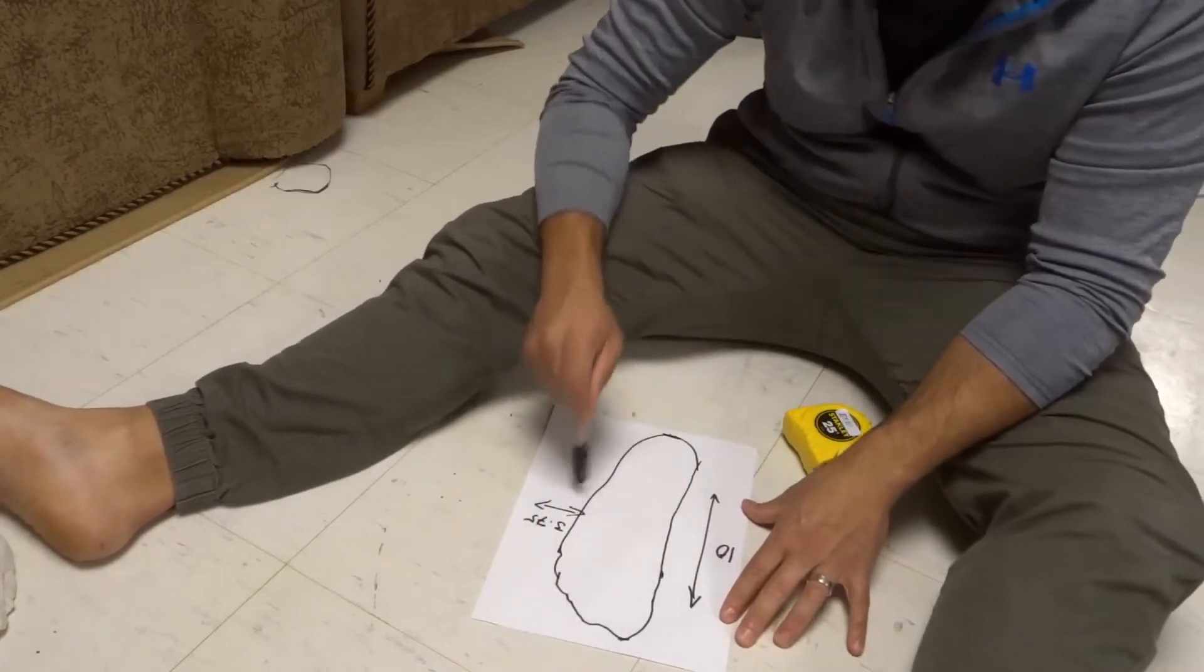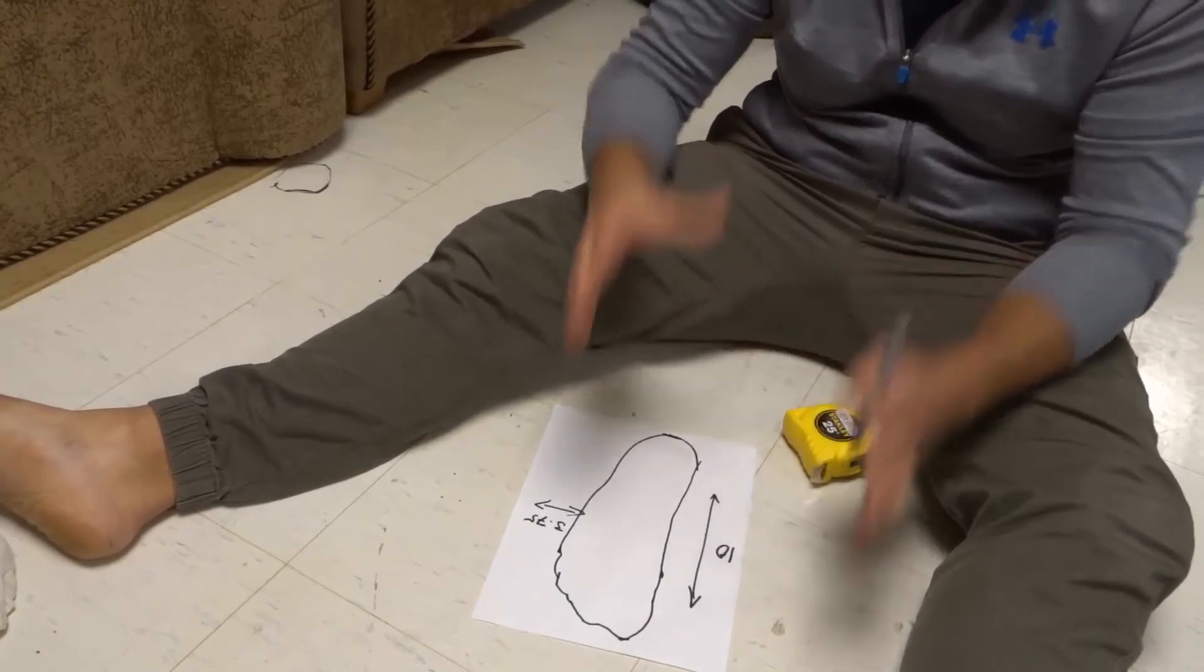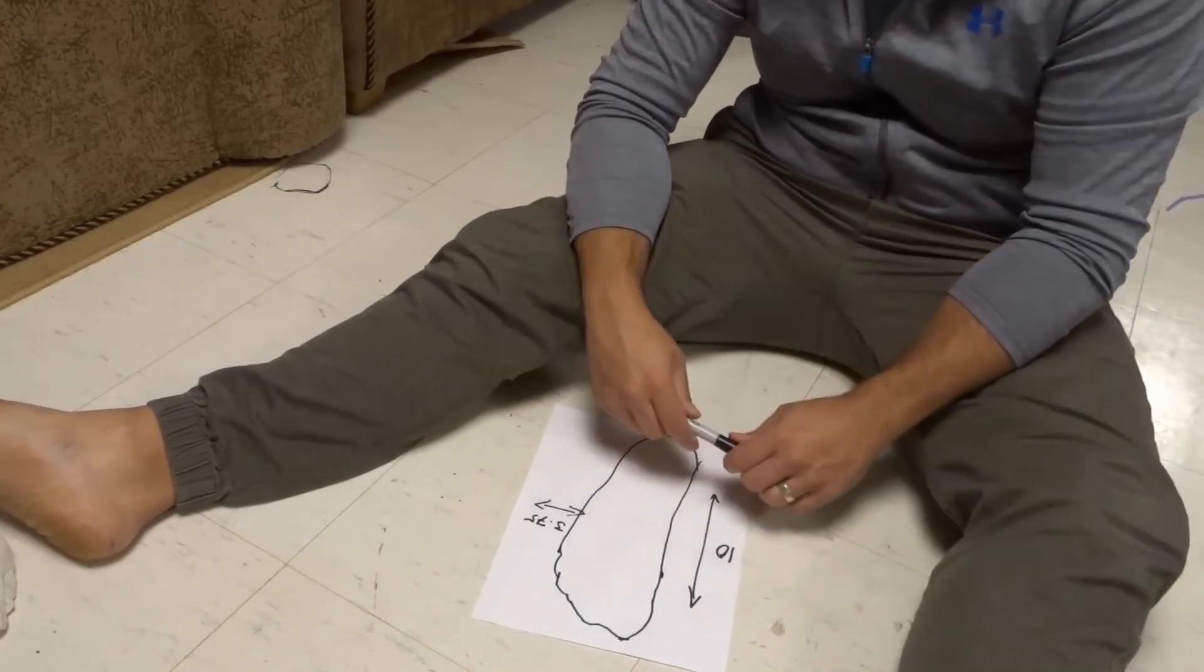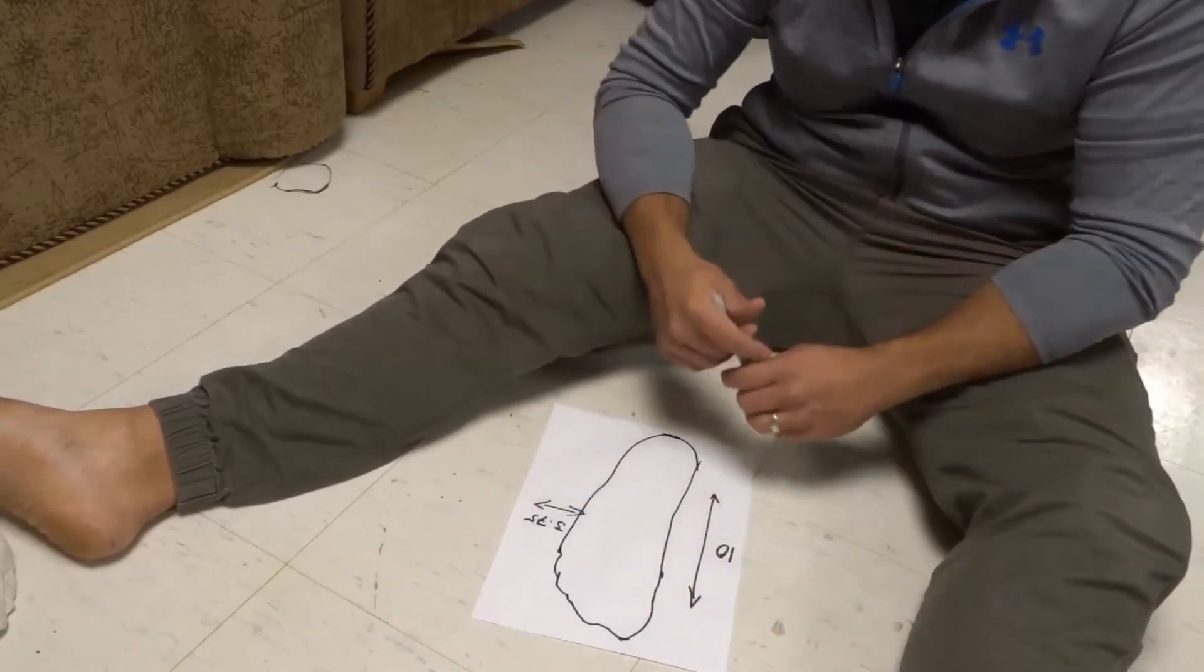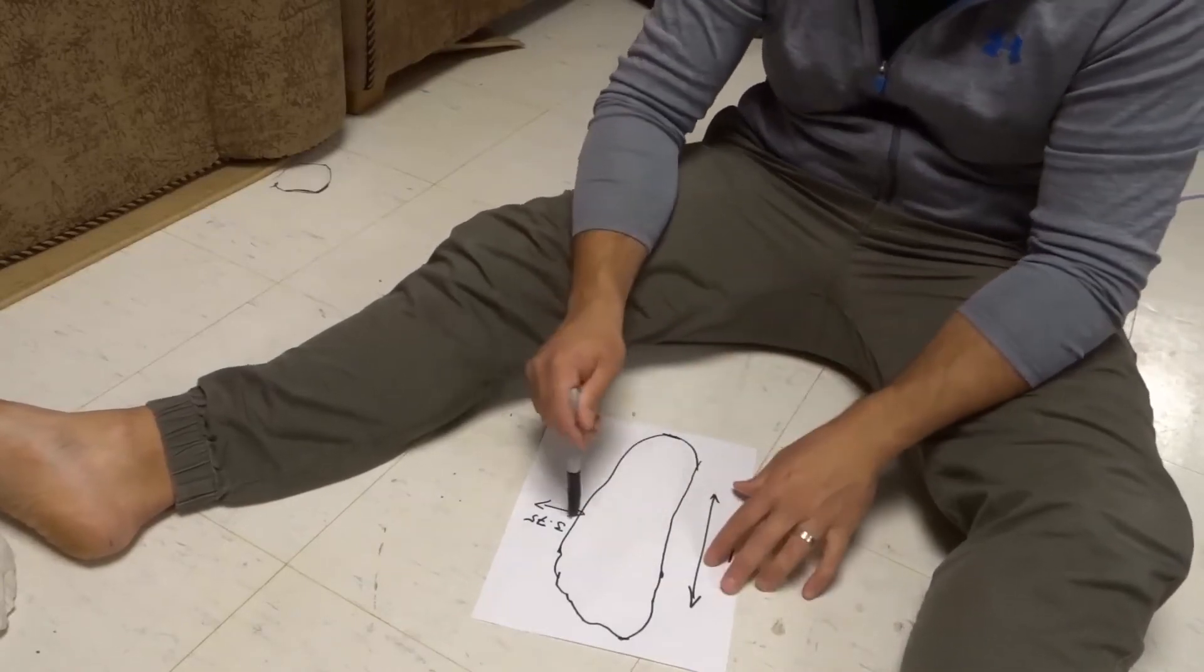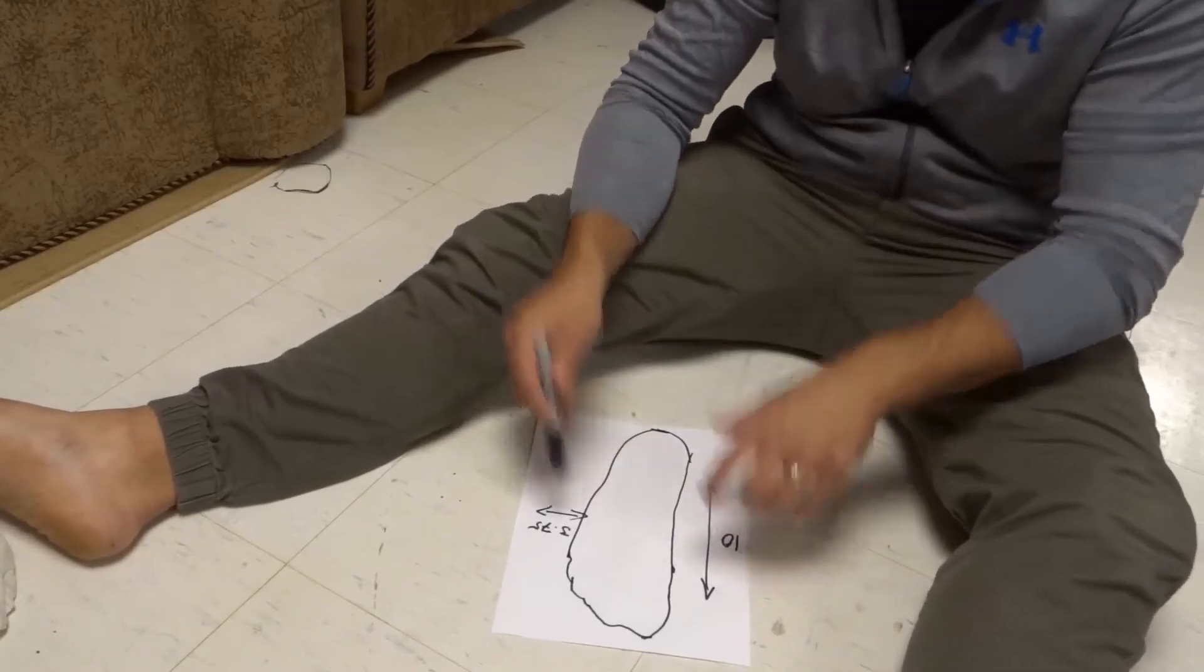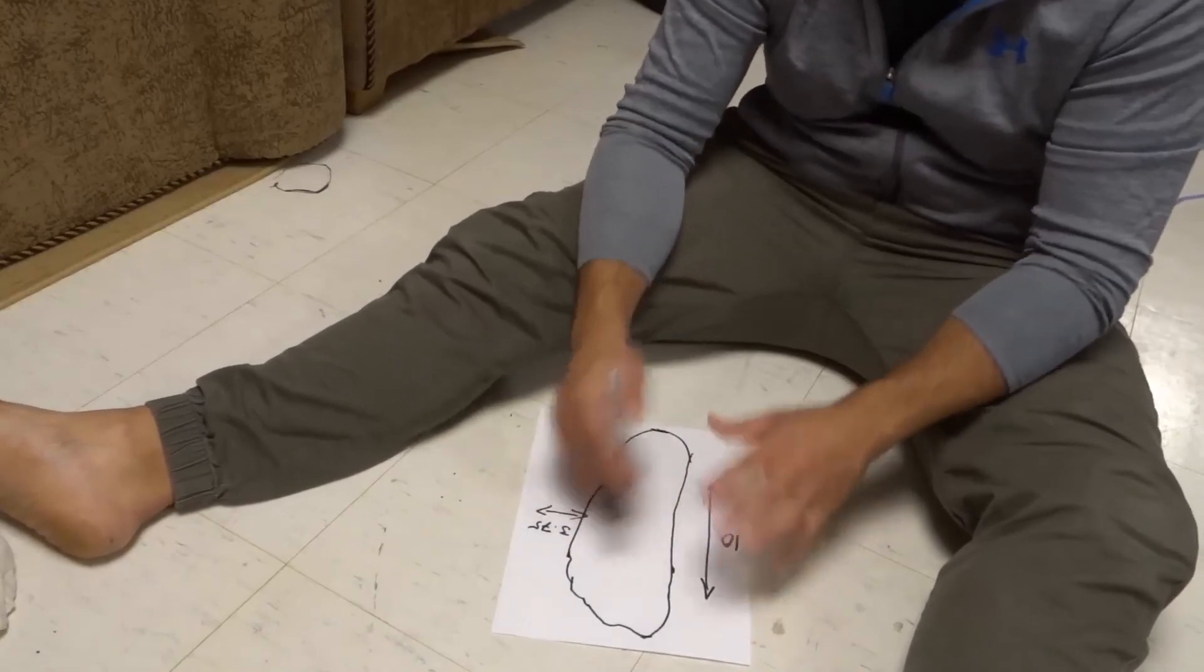Now what you're going to do is take those measurements and apply them to the foot size calculator or the shoe size calculator that the brand or the specific company of shoes is offering. So most companies, most brands, most shoe stores will have a shoe size calculator that will give you a rough estimate of what shoe size you should be looking for within their guidelines. So take these measurements and apply these measurements to that specific chart or calculator.